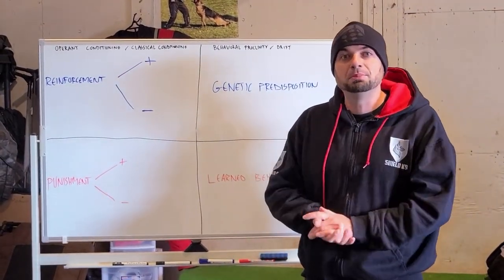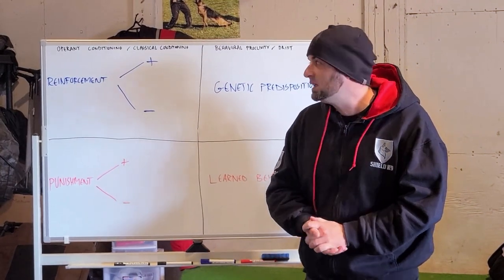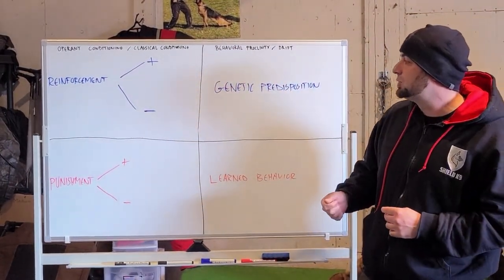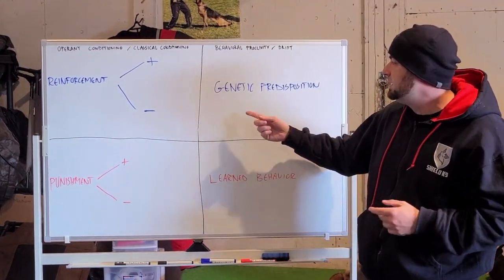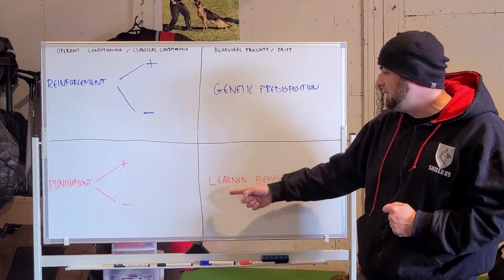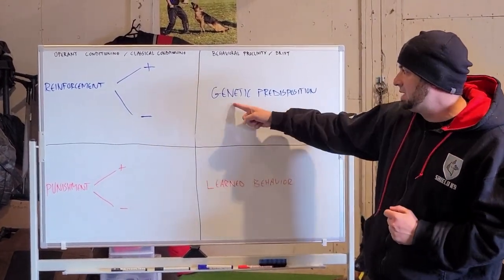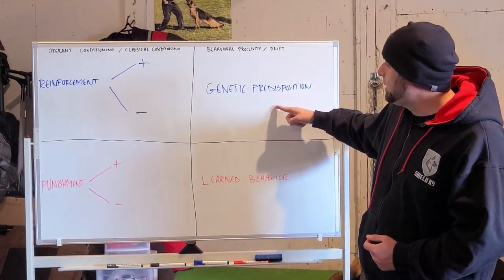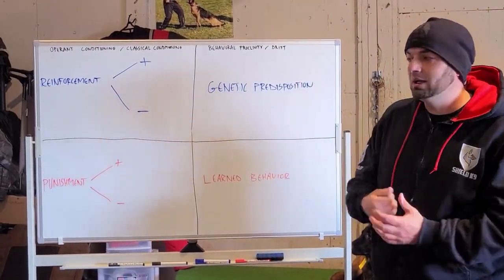Obviously, the level of blank slate that you have depends on the age of the dog. But even still, a six-week-old puppy, I'm sorry, it's not a blank slate because you have behavioral proclivity and drift. And what behavioral proclivity and drift describe is, for me, genetic predisposition and learned behavior. Obviously, if you have a six-week-old puppy, there isn't a whole lot of learned behavior there. But there is a whole lot of genetic predisposition. It's a huge part of who and what your dog is.